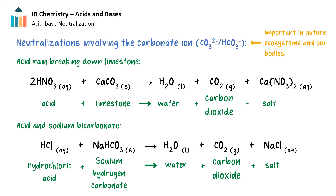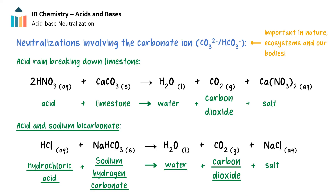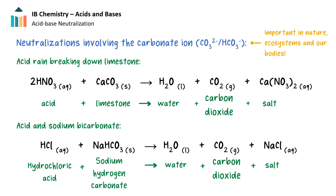An example of a reaction involving hydrogen carbonate is this one here. The reaction of an acid — in this case hydrochloric acid — with sodium hydrogen carbonate, also known as sodium bicarbonate. The products of this reaction are also water, carbon dioxide, and a salt. Notice that in both of these reactions, carbon dioxide is a product.